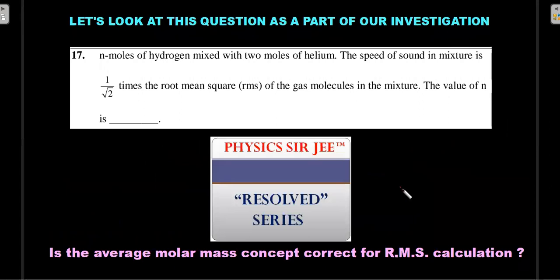What we'll do is we'll try to look at the concept that I discussed through a question that appeared in one of the weekend examinations for my offline students here. This is the question where they mixed n moles of hydrogen, obviously considered as an ideal gas, with two moles of helium. The speed of sound in that mixture was given to be one by root two times the root mean square speed of the gas molecules in the mixture. Using the relation you're supposed to estimate the numerical value of this n.